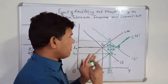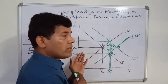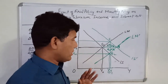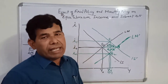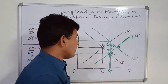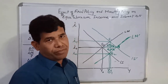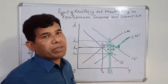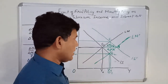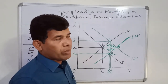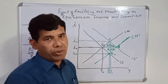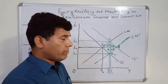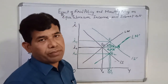This is the effect of expansionary monetary policy and contractionary monetary policy on equilibrium level of income and interest rate. Now, in case of the effect of monetary policy on equilibrium level of income, we need to talk about the transmission mechanism of monetary policy — that is, how expansionary or contractionary monetary policy leads to a rise or fall respectively in equilibrium level of income.